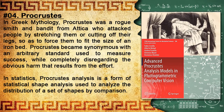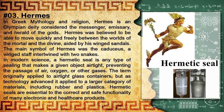Number 4: Procrustes. In Greek mythology, Procrustes was a rogue smith and bandit from Attica who attacked people by stretching them or cutting off their legs so as to force them to fit the size of an iron bed. Procrustes became synonymous with an arbitrary standard used to measure success while completely disregarding the obvious harm that results from the effort. In statistics, Procrustes analysis is a form of statistical shape analysis used to analyze the distribution of a set of shapes by comparison.